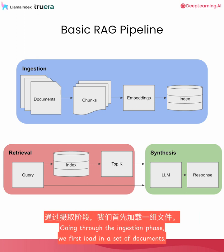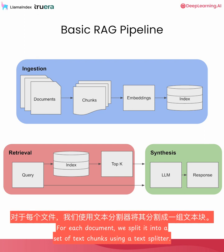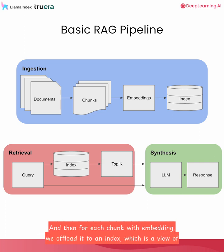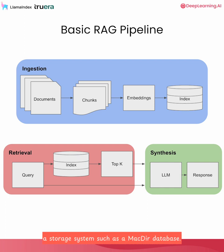Going through the ingestion phase, we first load in a set of documents. For each document, we split it into a set of text chunks using a text splitter. Then for each chunk, we generate an embedding using an embedding model. And then for each chunk with embedding, we offload it to an index, which is a view of a storage system such as a vector database.